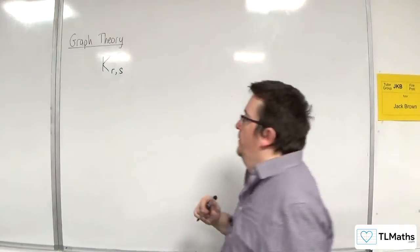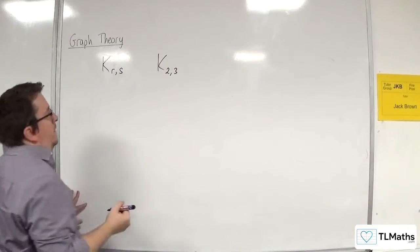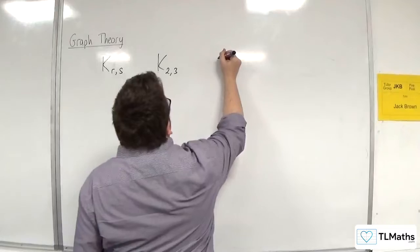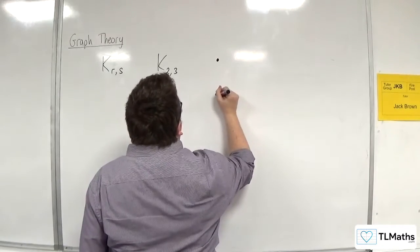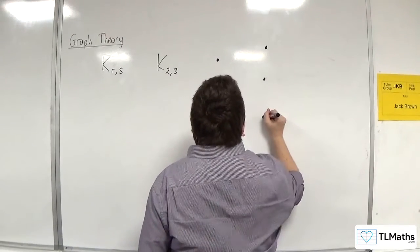So an example of K2,3 for a complete bipartite graph would look like this. We would have two vertices on the left, we would have three vertices on the right.